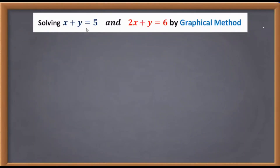We will solve the pair of linear equations x plus y is equal to 5 and 2x plus y is equal to 6 by graphical method. We all know that linear equations are straight lines in the graph. To draw a straight line in the graph we require points. First we will get the points from these two linear equations and then draw the straight lines.